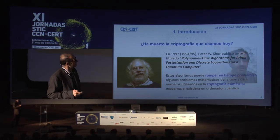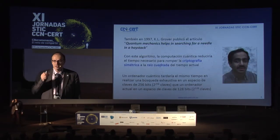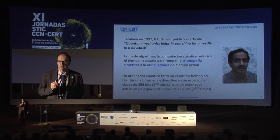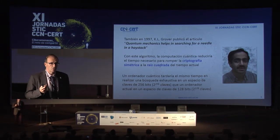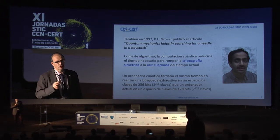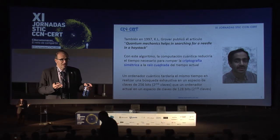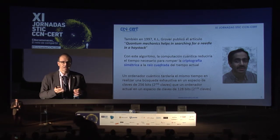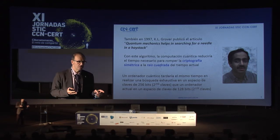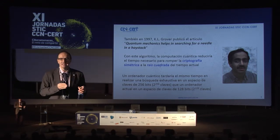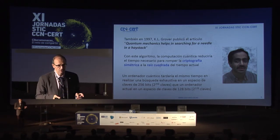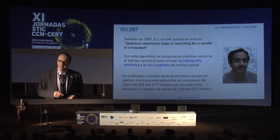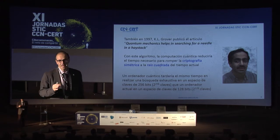Pero no solo eso. En el mismo año 97, Grover publicó otro artículo presentando un algoritmo que demostraba que con un ordenador cuántico sería factible dividir por dos las longitudes de las claves. Es decir, si uno tiene una clave de 256 bits, el espacio de claves se reduciría a su subraíz cuadrada. Un AES de 256 quedaría reducido a una seguridad equivalente a AES de 128. Eso significa que la criptografía de clave simétrica no está muy muerta, pero sí está ligeramente tocada.